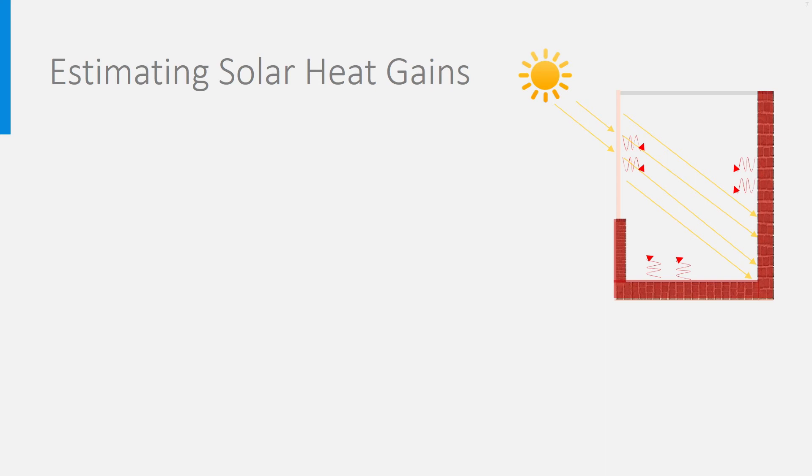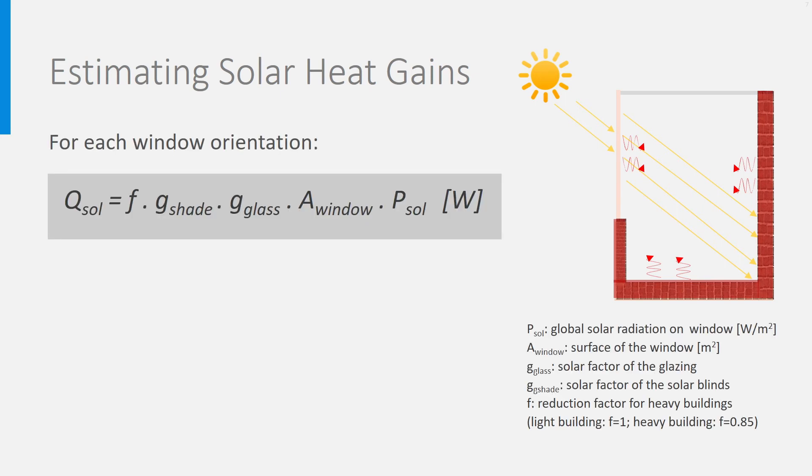How to calculate the solar heat gains? If the solar radiation on the window is p sol in watt per square meter, then the solar radiation hitting the window is the surface area of the window times p sol. So, to obtain the solar gains, we need to multiply this by the solar factors of the window and the solar blinds, if there are any, and also by the correction factor for building mass. For light building, F is 1, for heavy, it will be 0.85, as we have just seen.